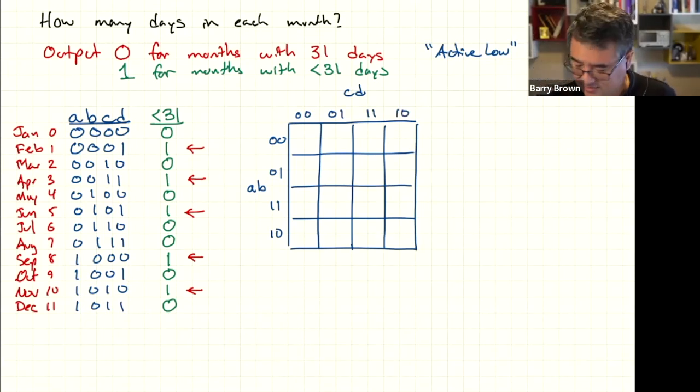Now we're going to put in those dots. So the first one here is in the 0001 box. So here's 00. Here's 01. We've got a dot right there. And this next one is in the 0011 box. So that's 0011 dot right there. The next one is in the 0101 box.